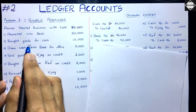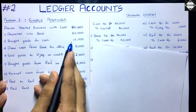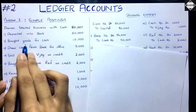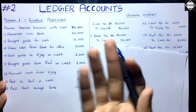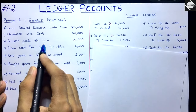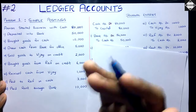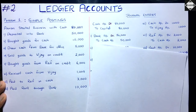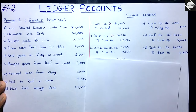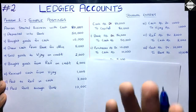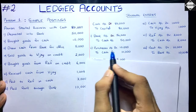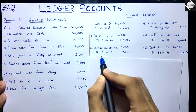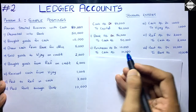Next: bought goods for cash 10,000. You have purchased goods, so purchases are increasing — expenses are increasing — and cash is decreasing because you spent the money. So the entry is: Purchases Account debit 10,000, to Cash Account 10,000. Asset decreases, so you credit cash.